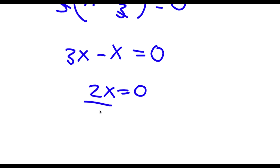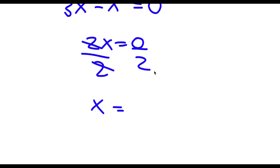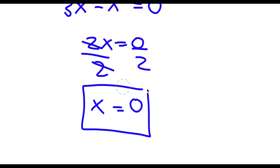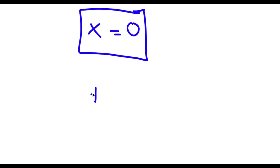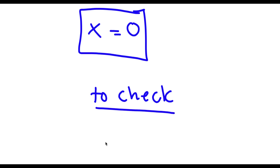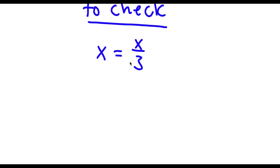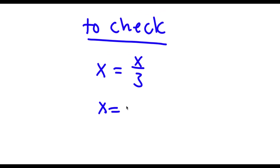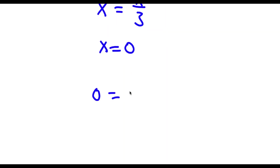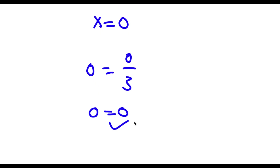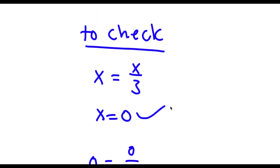And now this is pretty simple to solve. All I need to do is divide both sides by 2. These two cancel out. Now I'm left with x is equal to 0 divided by 2, which is simply 0. So this is my answer. Now to check, I had x is equal to x over 3, and the value of x is 0. So now I have 0 is equal to 0 over 3. 0 divided by any number is simply 0. So now I have 0 equals 0, and because this is right, I know my solution is right.